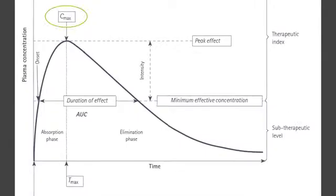C-max is the peak plasma concentration. T-max is the time required to reach C-max.